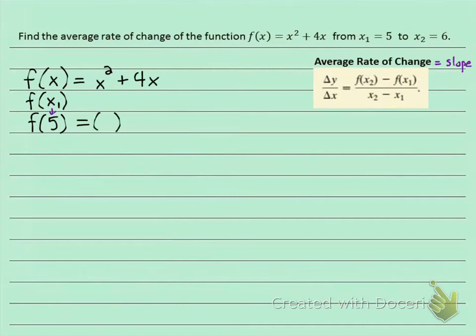That's going to be x² + 4x. Instead of x, we're going to plug in 5. So 5² = 25, plus 4 times 5 is 20. 25 plus 20 is 45. So we found f(x₁) = 45.